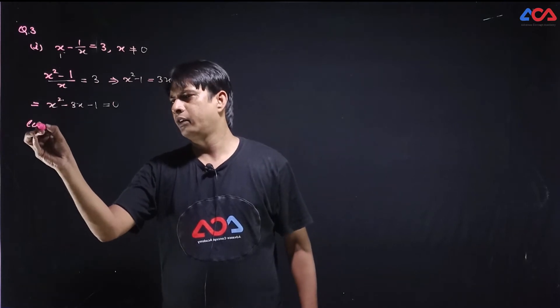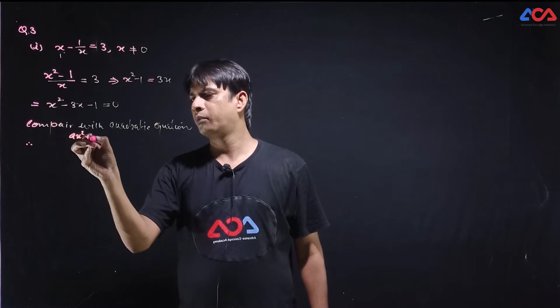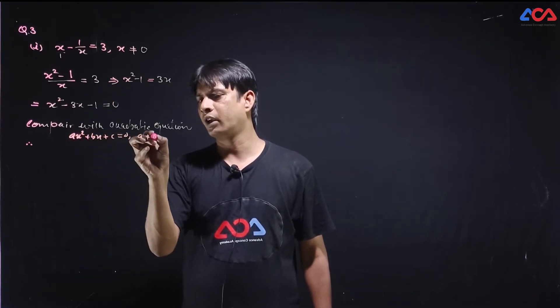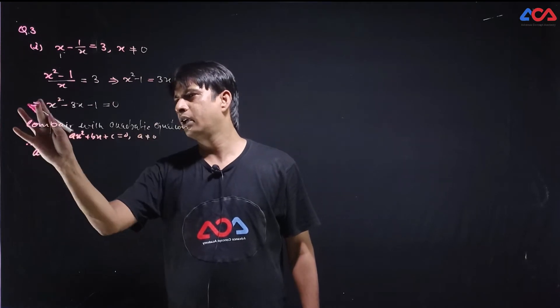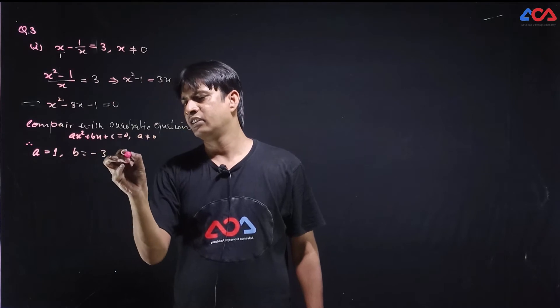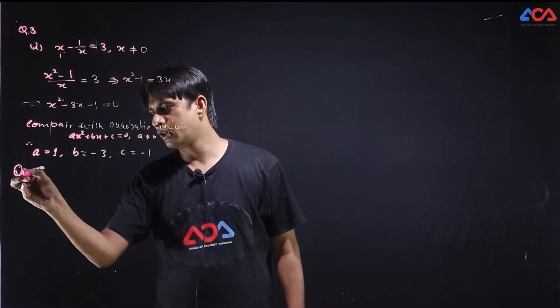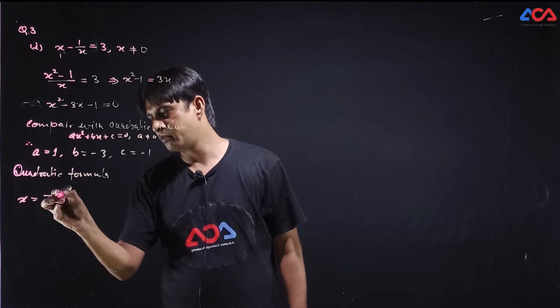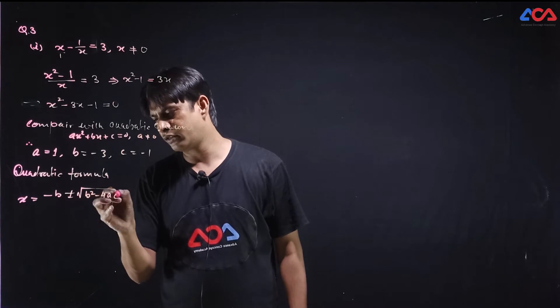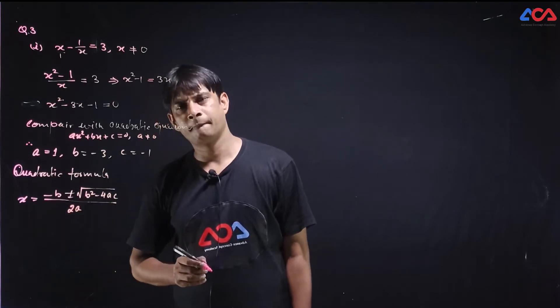Compare with by using quadratic formula we solve. A x square plus b x plus c is equal to 0. We compare it with a value. A x square minus 3x minus 1. Quadratic formula what happens? X is equal to minus b plus minus root b square minus 4ac upon 2a.